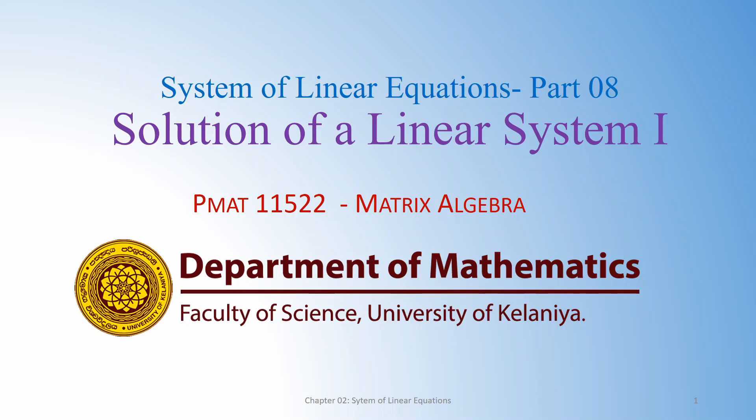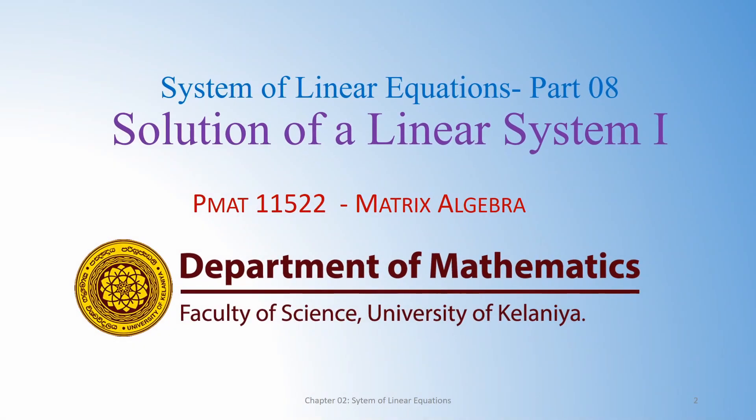Welcome to the 8 video lessons of system of linear equations. In this lesson we will discuss the solution of a linear system. There are three types of possibilities for a linear system. We will discuss these using the row echelon form of a matrix — how we can decide whether the system has a unique solution, infinitely many solutions, or no solution.